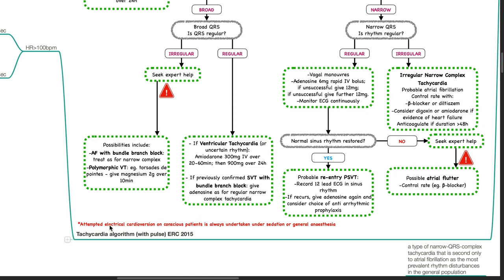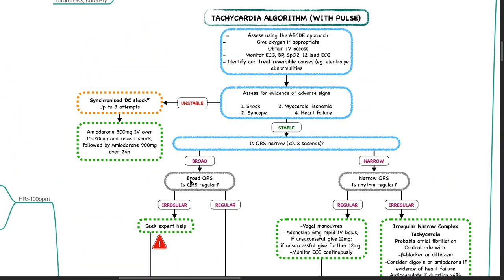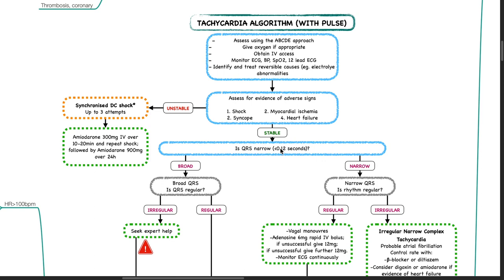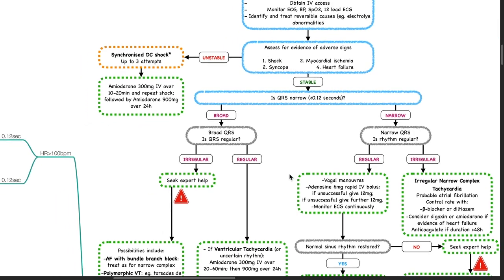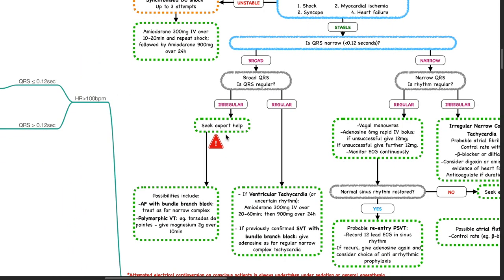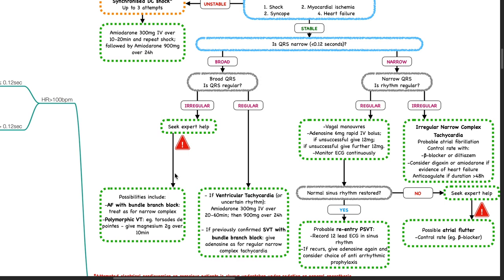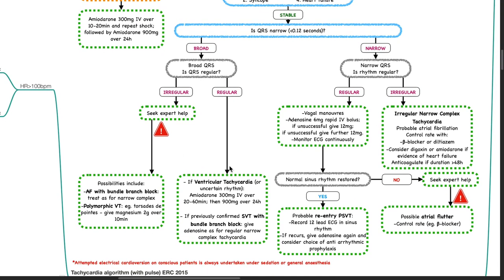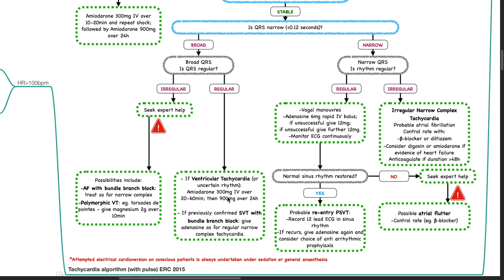Attempted electrical cardioversion on conscious patients is always undertaken under adequate sedation or general anesthesia. If the patient is stable, check if the QRS is narrow (less than 0.12 seconds). If broad QRS complex, check if QRS complexes are regular. If broad and irregular, seek expert help. Treatment is amiodarone 300 mg IV over 20–60 minutes, followed by 900 mg over 24 hours. If previously confirmed SVT with bundle branch block, give adenosine as for regular narrow complex tachycardia.